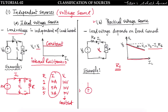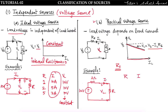Let us take an example. We have a 10-volt source with internal resistance Rs equal to 1 ohm, connected with a load resistance R. The voltage across the load is VL and the current flowing through the circuit is IL.